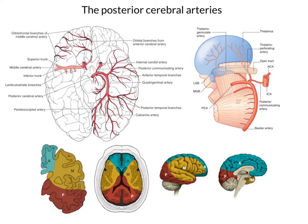You can see here that there are little branches from the posterior cerebral artery going into the midbrain. The posterior cerebral artery is the main arterial supply to the midbrain.